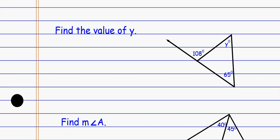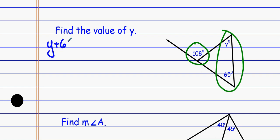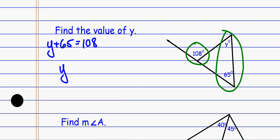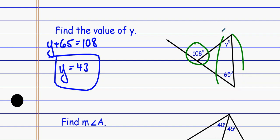If I look at another example: the exterior angle equals the remote interiors added together. So y plus 65 equals 108. Subtract 65 from each side: y equals 43. If you forget the theorem, you can find that 108 and its supplementary angle form a linear pair, so that angle is 72 degrees, and then the three inside have to add to 180.